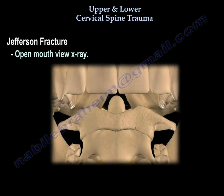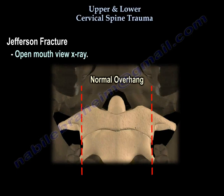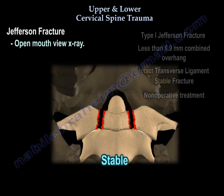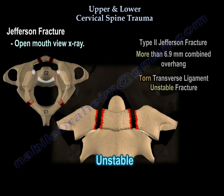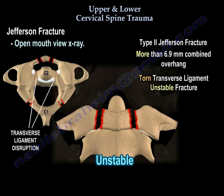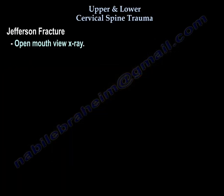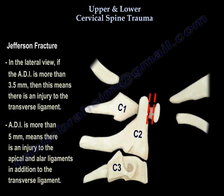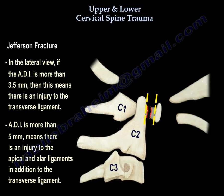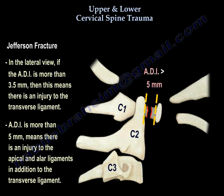On an open mouth x-ray, if the lateral mass overhang is less than 6.9 mm, then that fracture is stable and the treatment is usually non-operative. But if the lateral mass overhang is more than 6.9, then there is disruption of the transverse ligament. On the lateral view, if the ADI is more than 3.5, there is injury to the transverse ligament; if it is more than 5, there is injury to the alar and apical ligaments in addition to the transverse ligament.